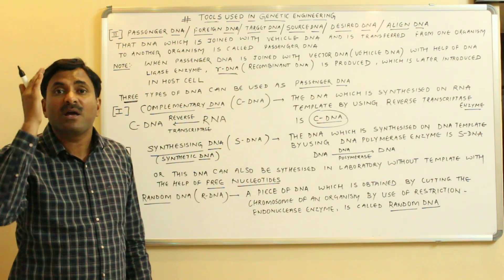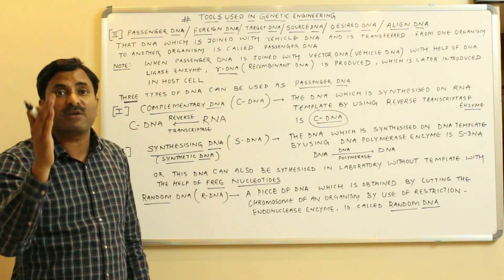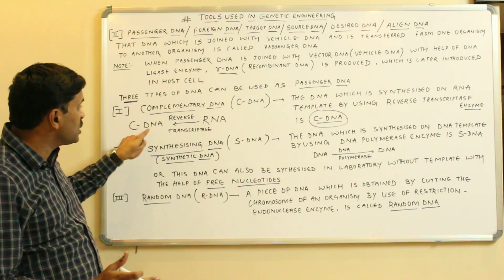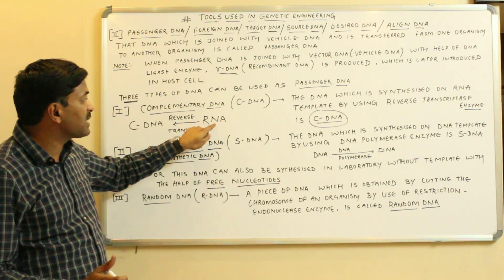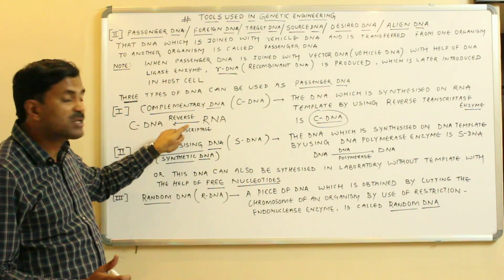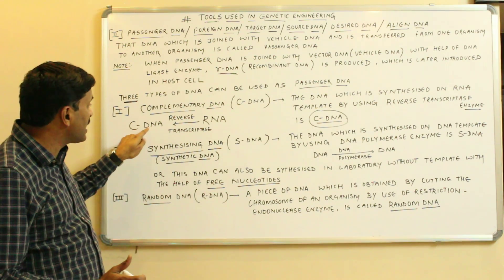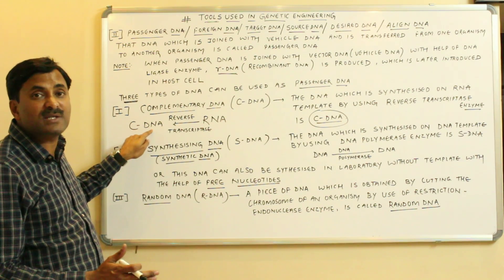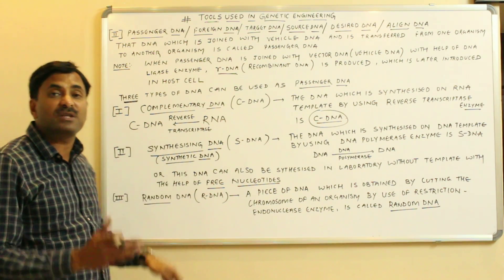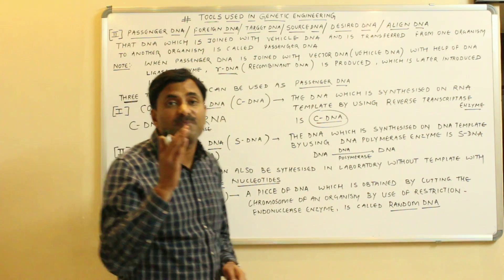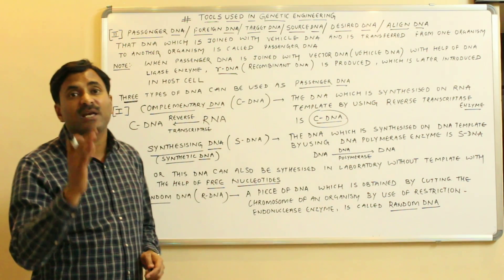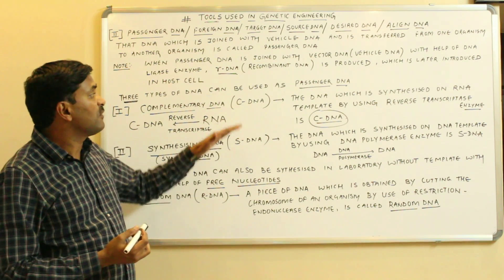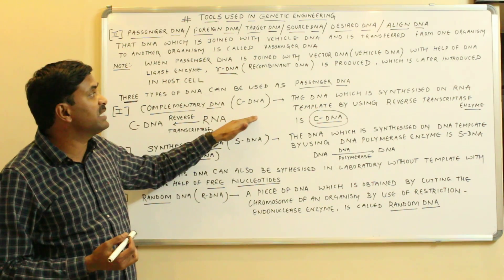In reverse transcription, a DNA is synthesized on an RNA template by the use of the reverse transcriptase enzyme. You can see here that the new DNA synthesized by RNA with the help of reverse transcriptase is called complementary DNA, and this cDNA can be used as the passenger DNA or desired DNA in genetic engineering.